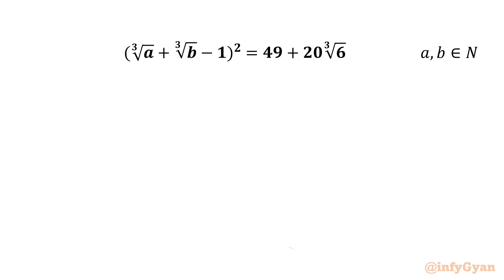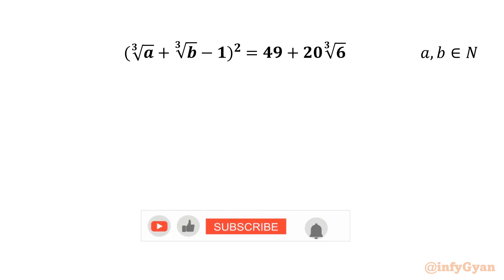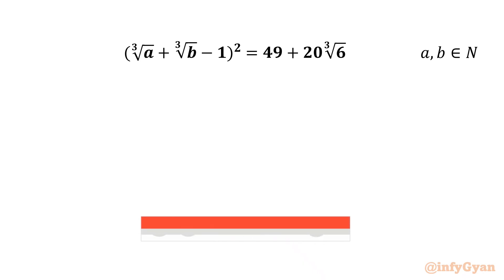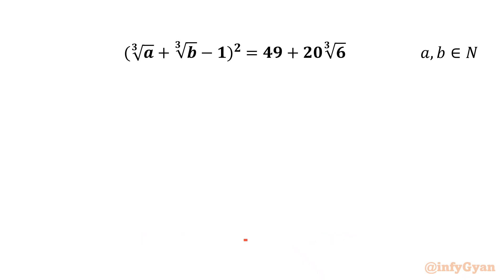Hello friends, welcome back to Infigyan. Today in this video we are going to solve one very interesting and challenging question from the British Mathematical Olympiad 2000. We have: cube root of a plus cube root of b minus 1, whole squared, equals 49 plus 20 times cube root of 6, given that a and b are natural numbers.